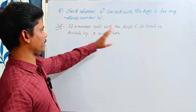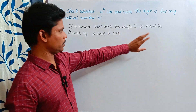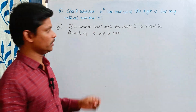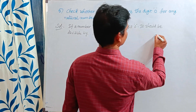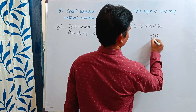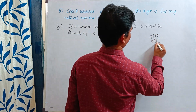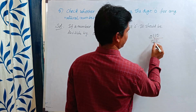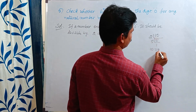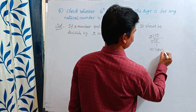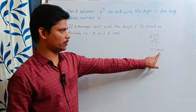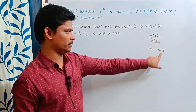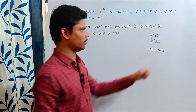See here, if a number ends with 0, it is compulsory that it should be divisible by 2 and 5 both. We will see an example: 10 — here 2 × 5 = 10, it ends with 0 and is divisible by 2 and 5. So it is compulsory that if a number ends with 0, it must be divisible by 2 and 5.